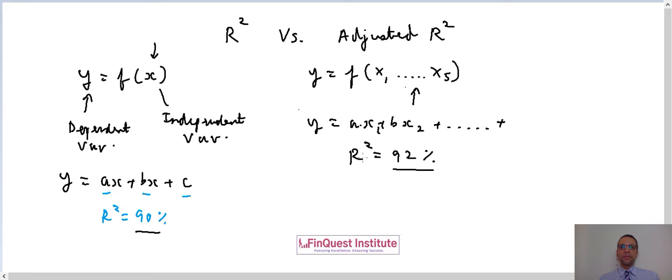It may so happen that out of the five variables I'm sending as inputs or independent variables, let's say just two variables are adding explanatory power to the model.